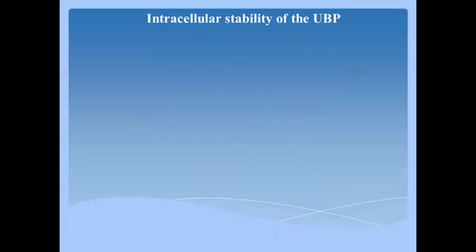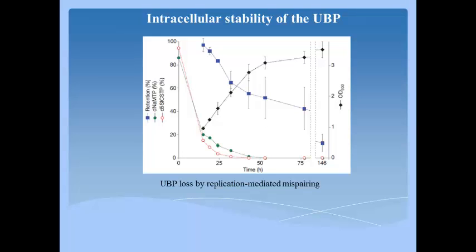Authors looked at unnatural base pair stability inside the cells. Since the unnatural base pair was retained over a 15-hour period of growth, indicating it is not efficiently excised by DNA repair pathways, authors tested this hypothesis further by examining retention during prolonged stationary phase growth, repeating experiments but monitoring unnatural base pair retention.